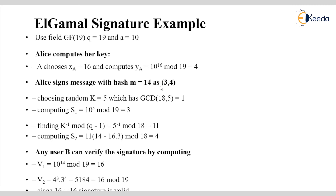Alice chooses a random value k satisfying gcd(q−1, k) = 1. She computes s1 = a^k mod q = 10^5 mod 19, and then computes s2 using s1, obtaining s2 = 11. So the signature pair is (s1, s2) = (3, 11). User B, the receiver, then verifies the signature by computing v1 and v2, which must be equal.